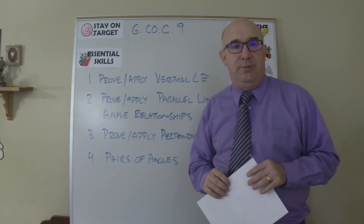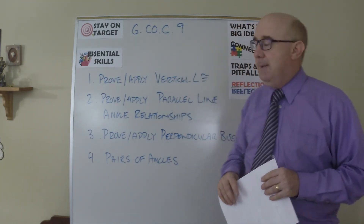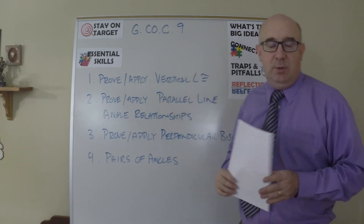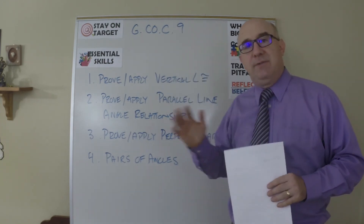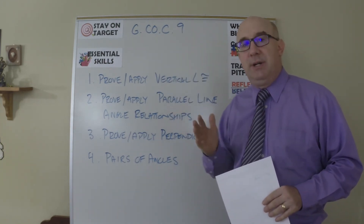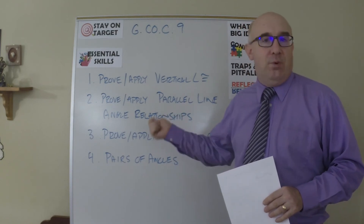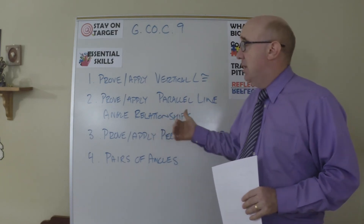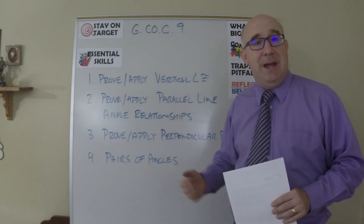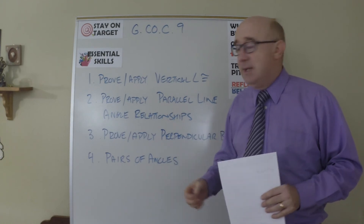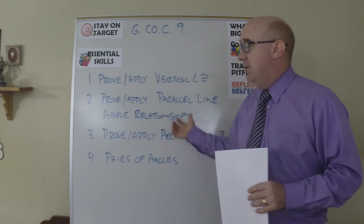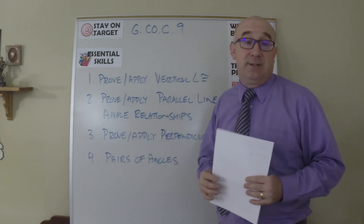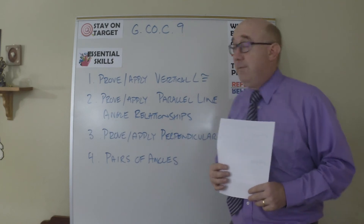We're ready to prove things. One thing I would mention about this particular standard is that most of them I do in order, but this one I do earlier — before I get to congruence — because when I start to prove things about congruence, knowing angle relationships like vertical angles being equal is important.